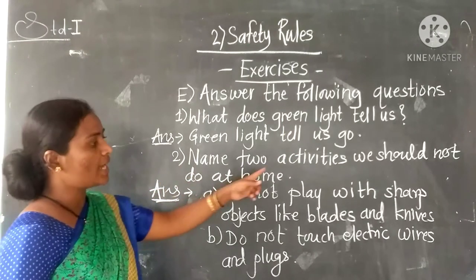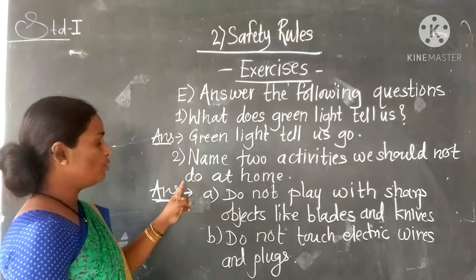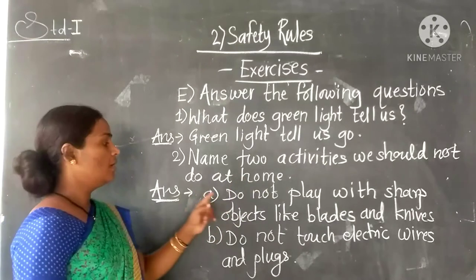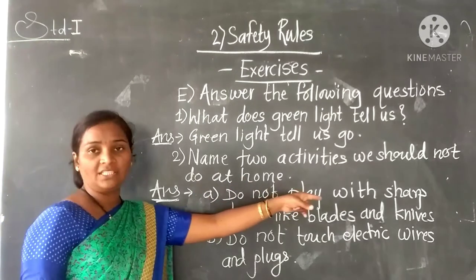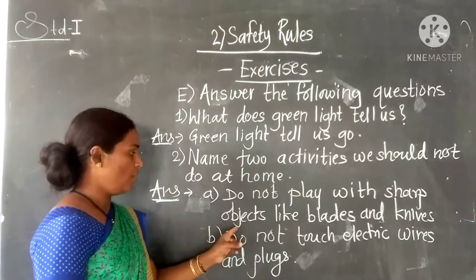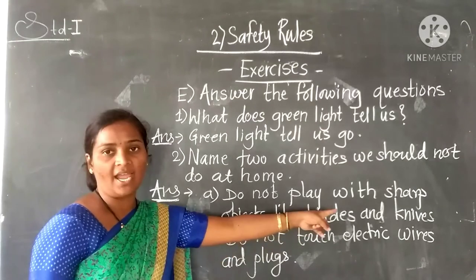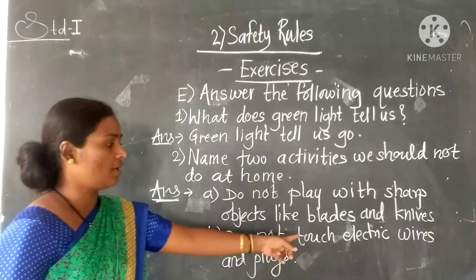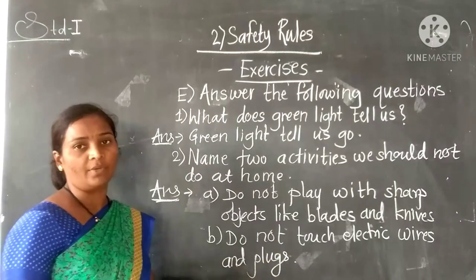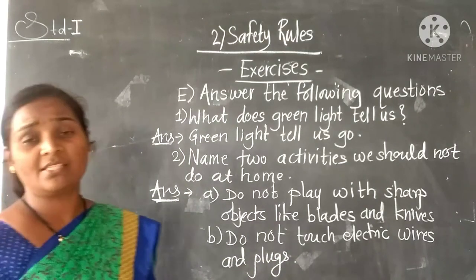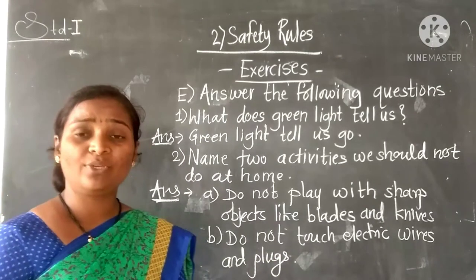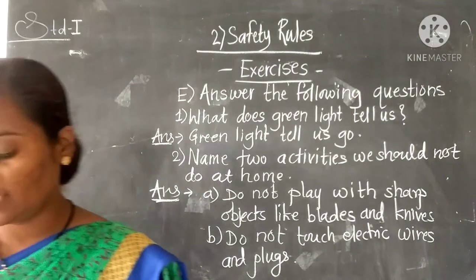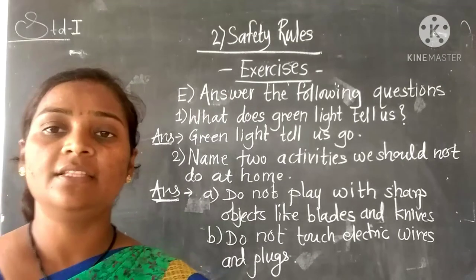Question two: name two activities we should not do at home. Answer: A — do not play with sharp objects like blades and knives. B — do not touch electric wires and plugs. You can also write other activities instead of these.